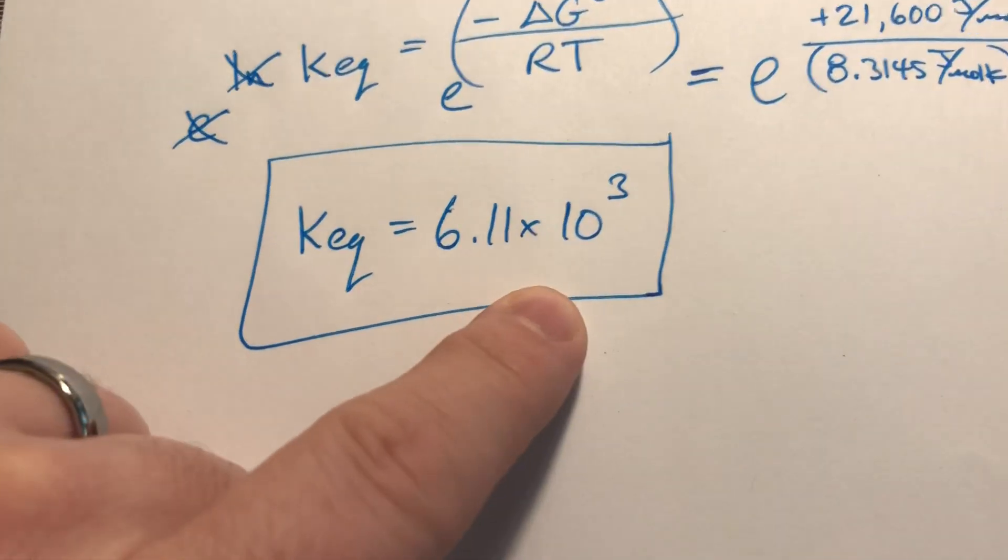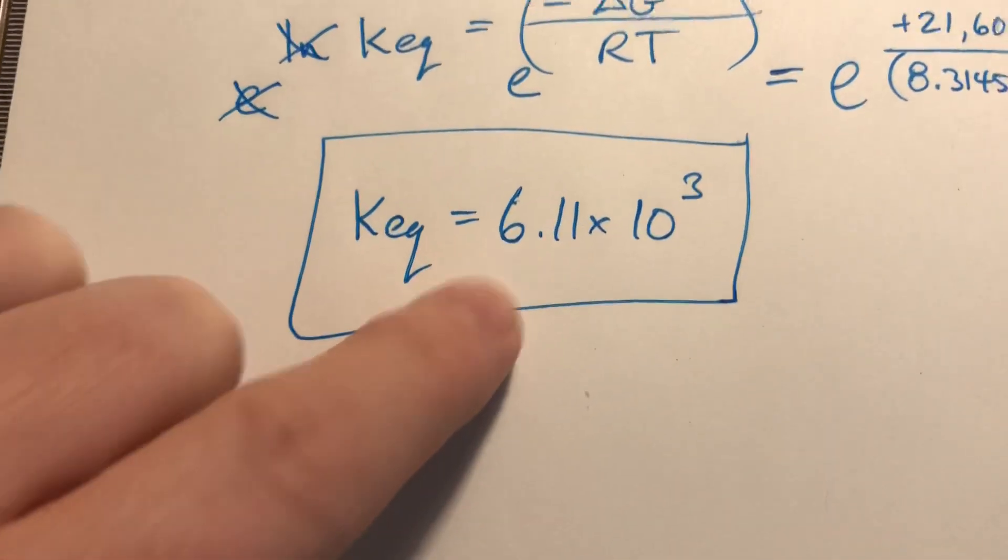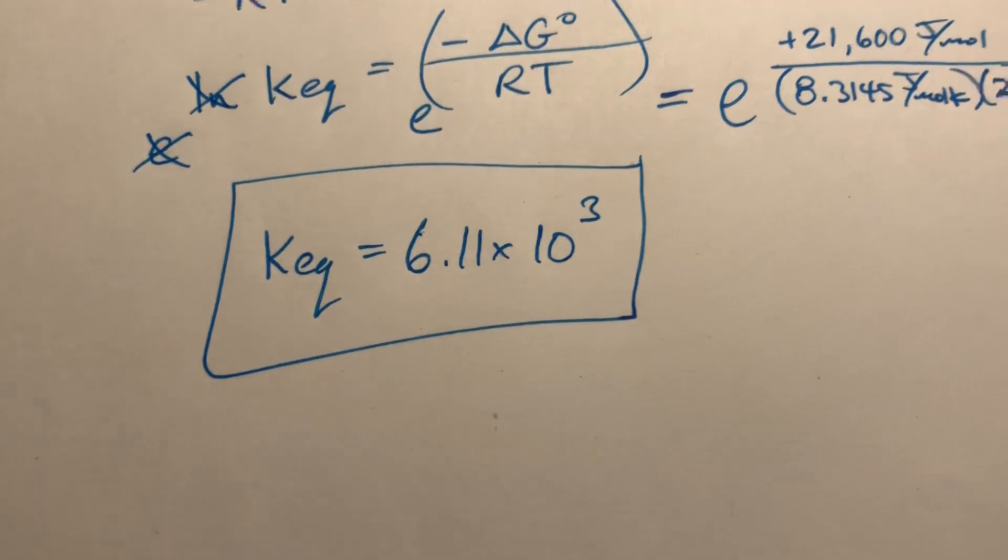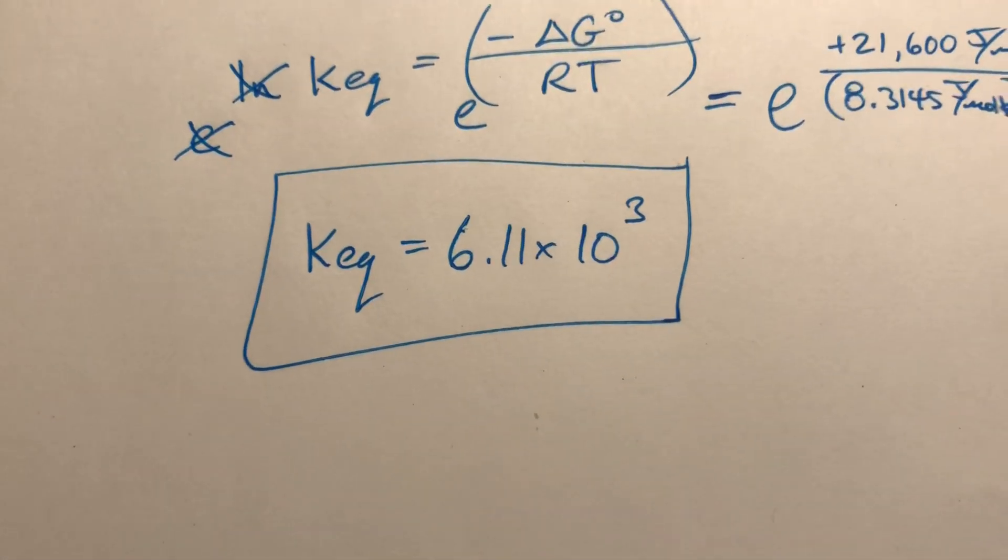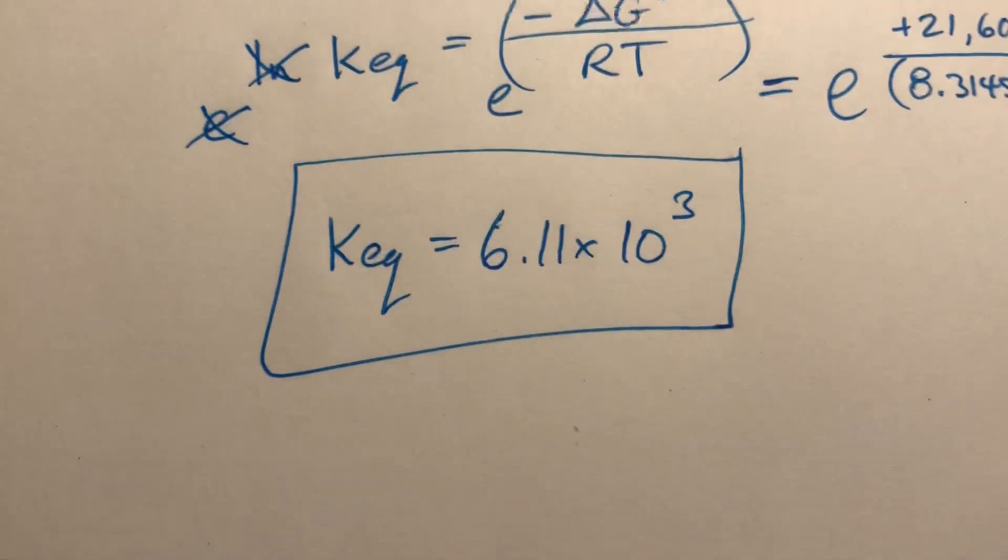A KEQ bigger than one, which this is, you know, 6,000, means that this reaction is predominantly going in the forward direction, which is the same thing as having a spontaneous reaction. So, self-consistent should be good.